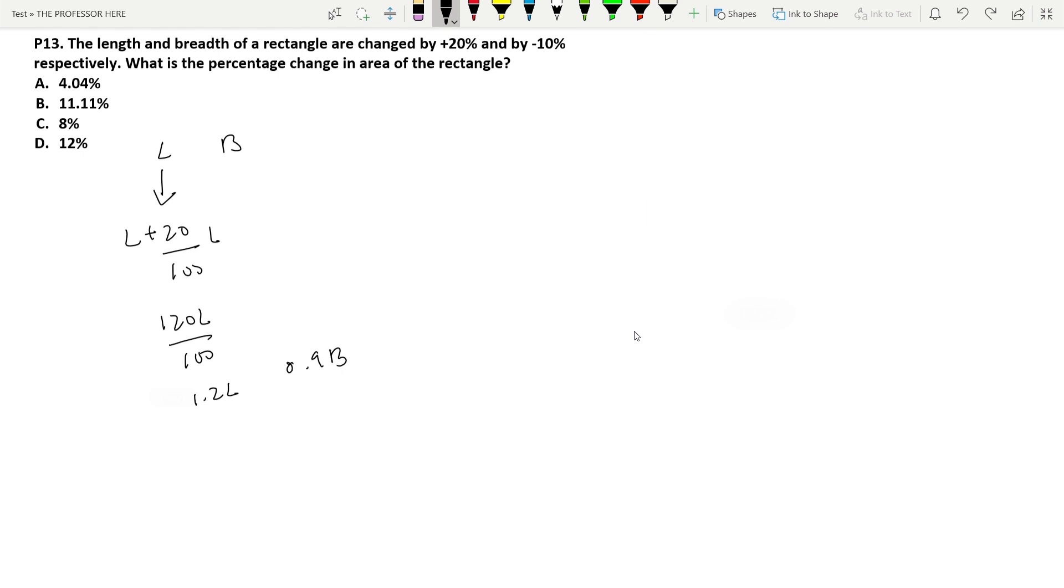The question is to find the percentage change in area of the rectangle. The initial area is l into b and the area now is 1.2 l into 0.9 b. So 1.2 into 0.9 means 1.08 l b. So it changed from l b to 1.08 l b. So what is the percentage change? To find the percentage change, all you have to do is find the change: 1.08 l b minus l b, all divided by the initial value which is l b, into 100. So it becomes 0.08 l into b divided by l into b. It gets cancelled into 100 which is 8 percentage. So option C is the answer.